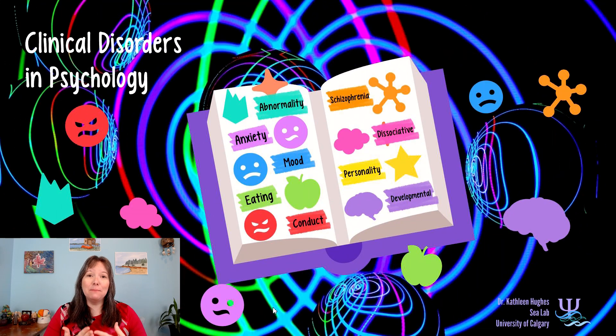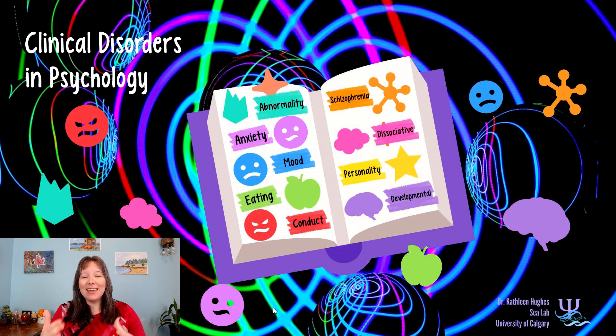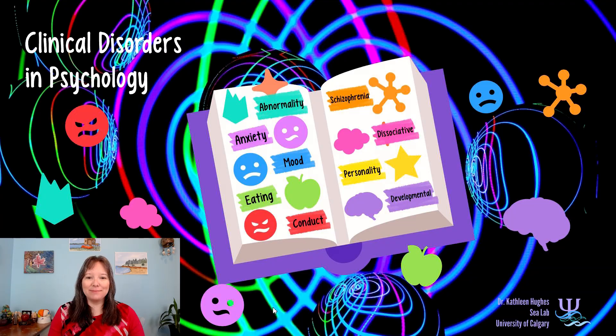So that's a brief history and definition of what we mean by abnormality. Next, we're going to start jumping into some of the types of disorders, again organized by their symptomology rather than their causes or treatment.